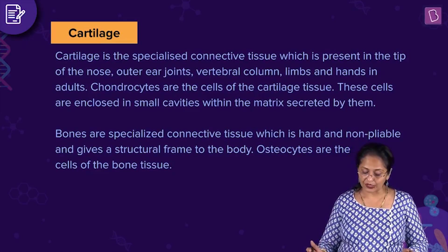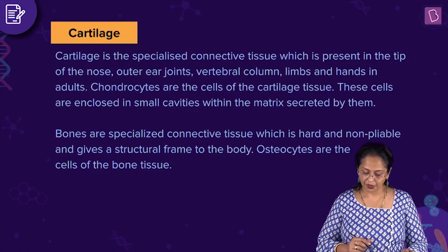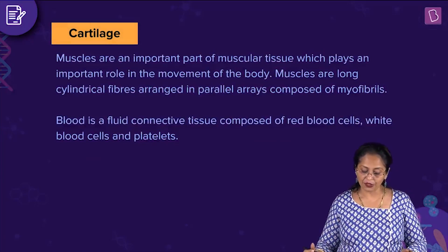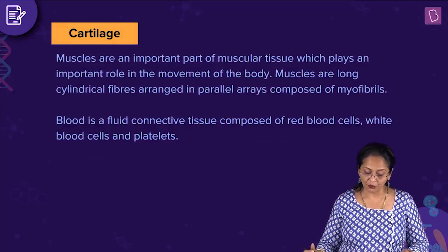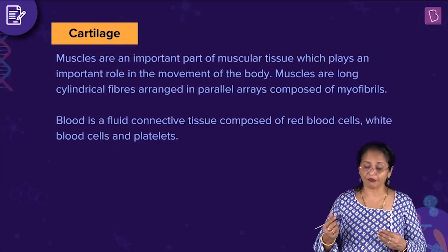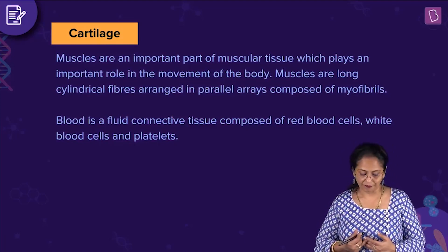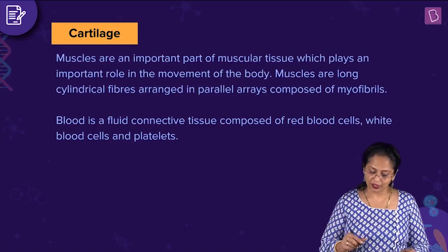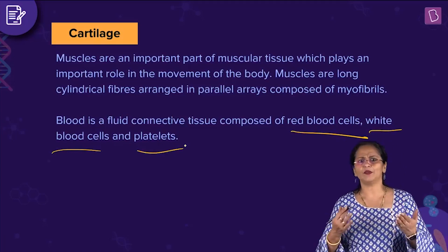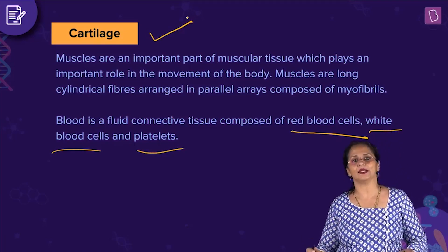Bones are specialized connective tissue — hard and non-pliable — giving a structural frame to the body. Osteocytes are the cells of bone tissue. Muscles are an important part of muscular tissue, composed of long cylindrical fibers arranged in parallel arrays of myofibrils. Blood is a fluid connective tissue composed of red blood cells, white blood cells, and platelets in plasma. So the right answer is chondrocytes are found in cartilage.